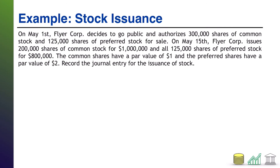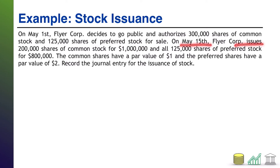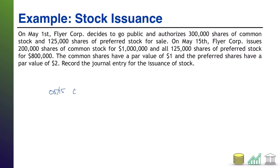Let's see this in an example. On May 1st, Flyer Core decides to go public and authorizes 300,000 shares of common stock and 125,000 shares of preferred stock. On May 15th, Flyer Core issues 200,000 shares of common stock for one million dollars and all 125,000 shares of preferred stock for eight hundred thousand dollars. The common shares have a par value of one dollar; the preferred shares have a par value of two dollars. The company collected total cash of 1.8 million dollars on the day it issued the stock.